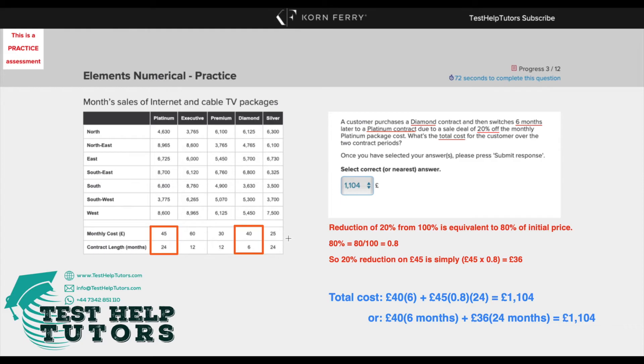Now, to do this, all we simply have to do is £40 times six months. This is the cost for the diamond package. And then we have to add that onto the cost of the platinum package at the special sale deal of 20% off. So we do £40 times six months and then we add £45 times 20% off, which is equivalent to 0.8 times 24 months.